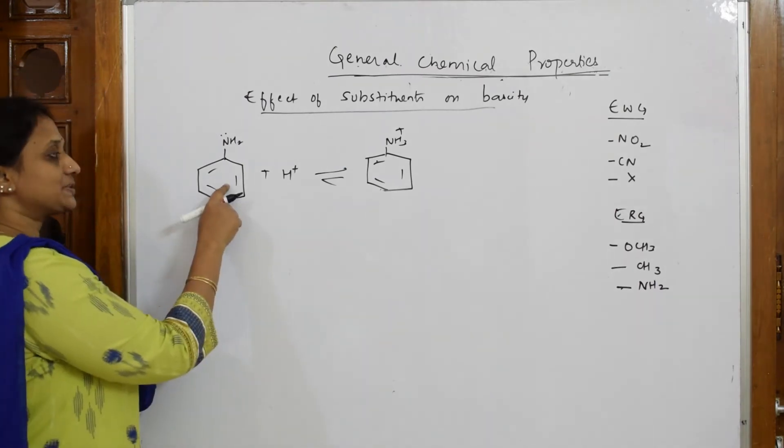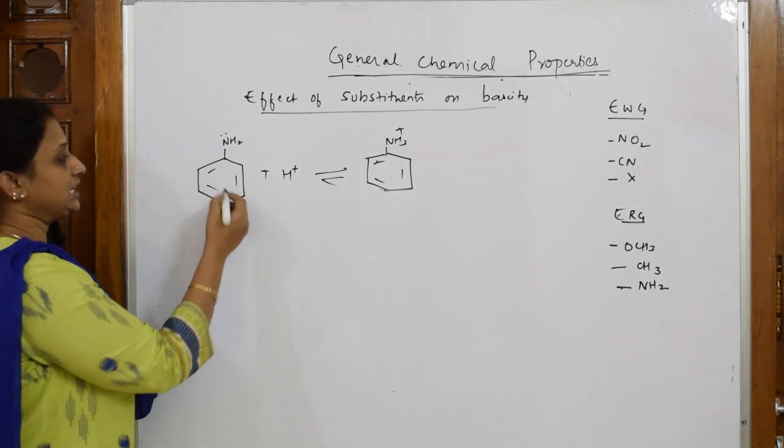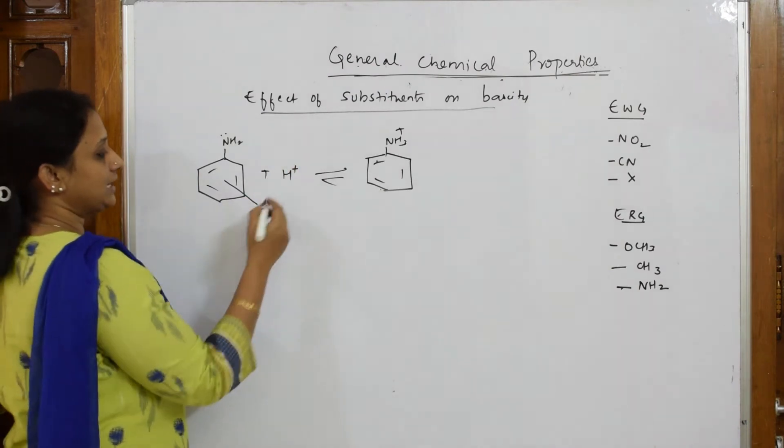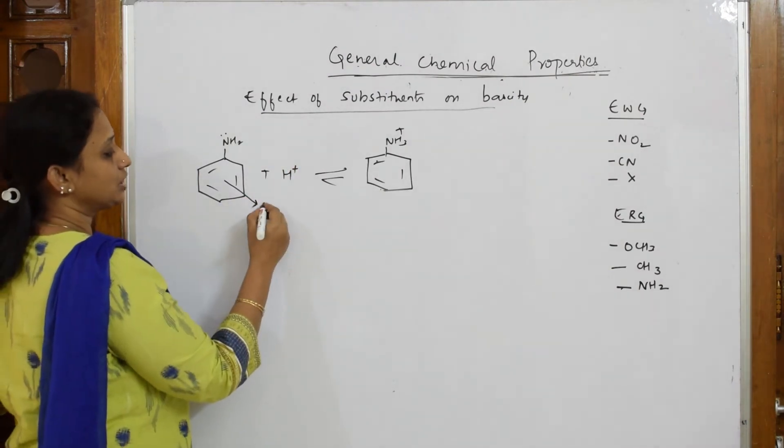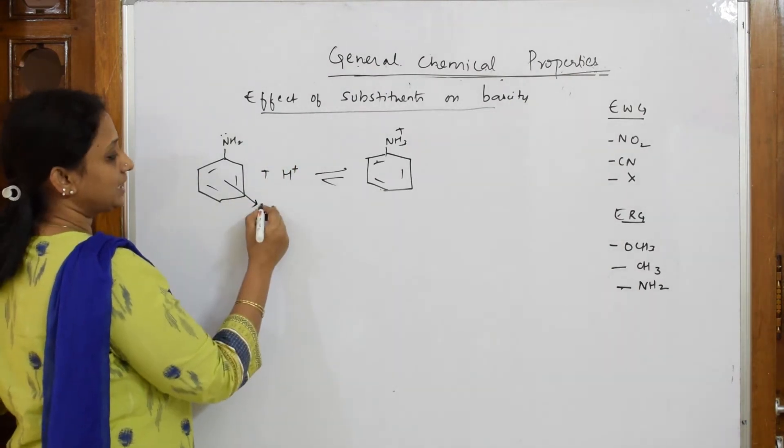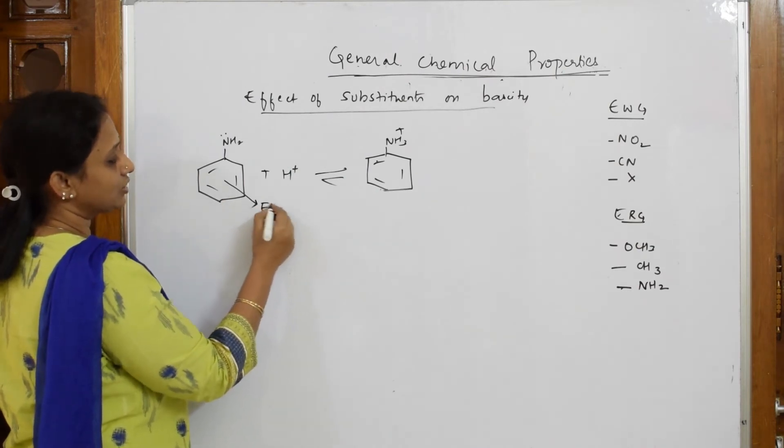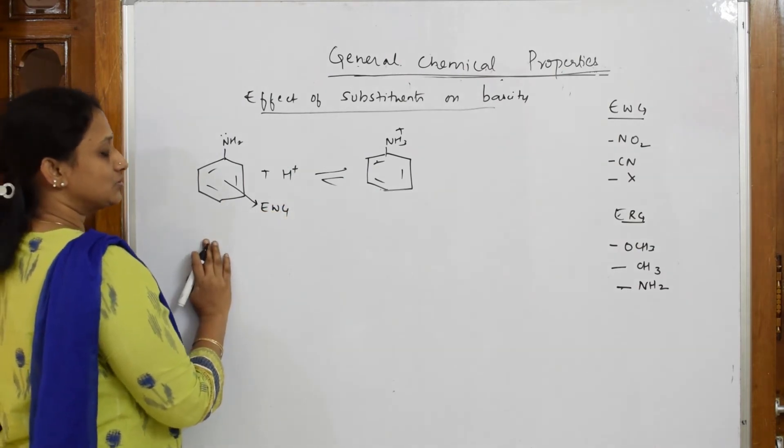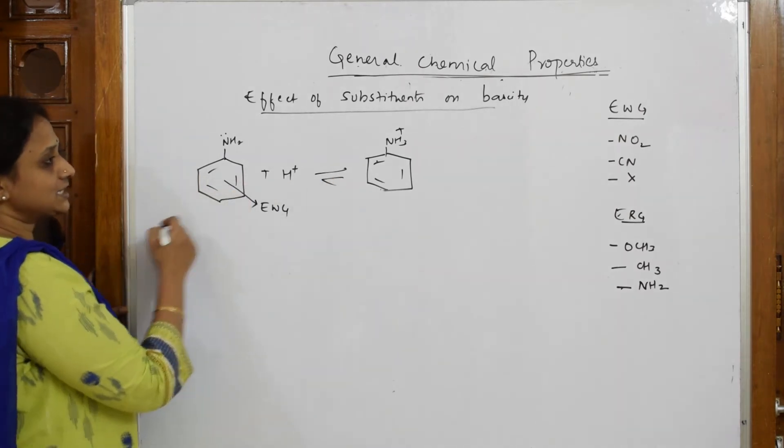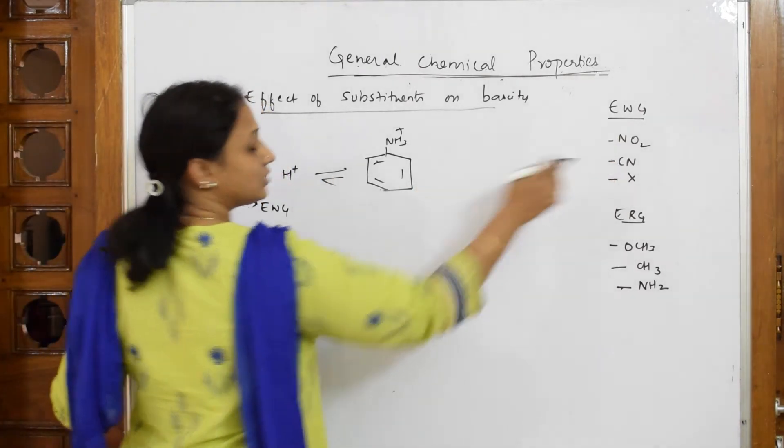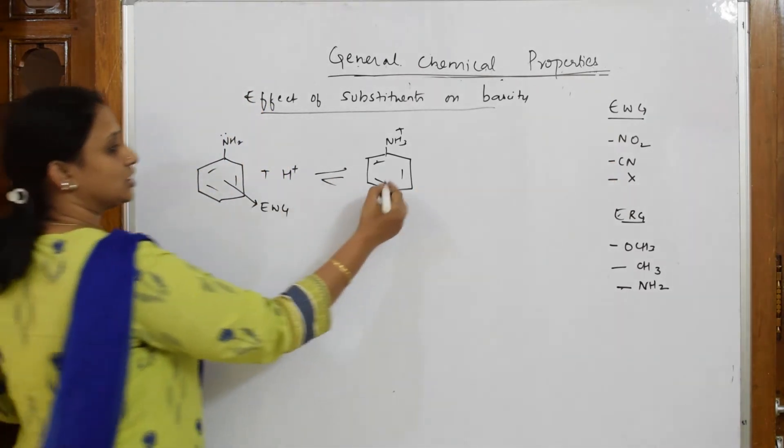Now, suppose to this particular aniline or anilineum ion, if you have electron withdrawing groups, I am going to write electron withdrawing groups. So, this electron withdrawing group, as I said, it can be nitro, cyano, and X. It can be anything.